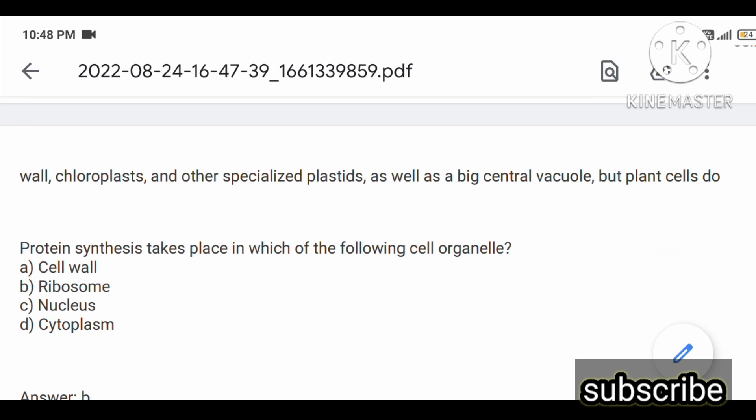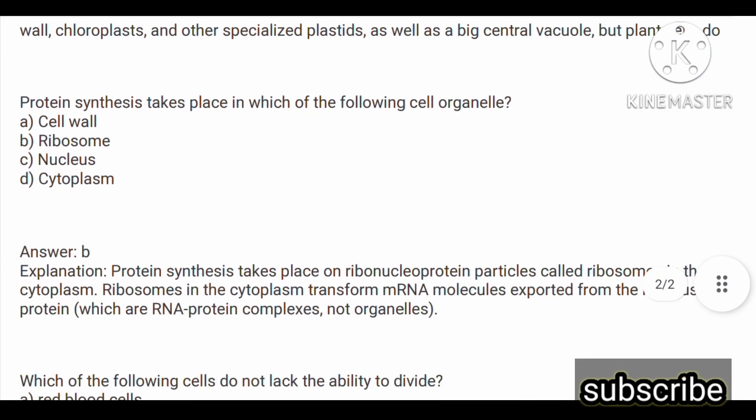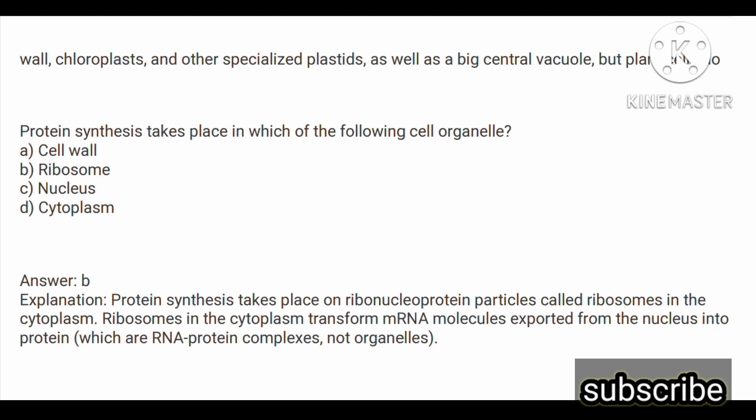Next question: protein synthesis takes place in which of the following cell organelles? Options are: cell wall, ribosome, nucleus, and cytoplasm. The correct answer is option B, ribosome. Protein synthesis takes place on ribonucleoprotein particles called ribosomes in the cytoplasm. Ribosomes in the cytoplasm transform mRNA molecules exported from the nucleus into proteins.